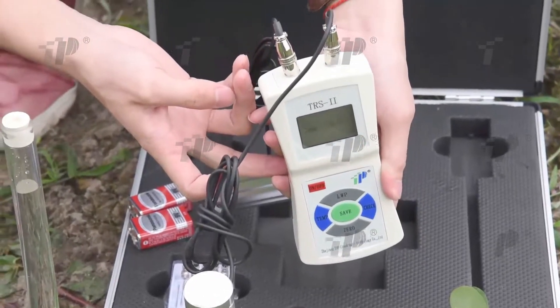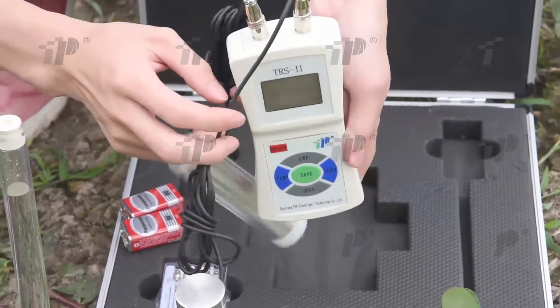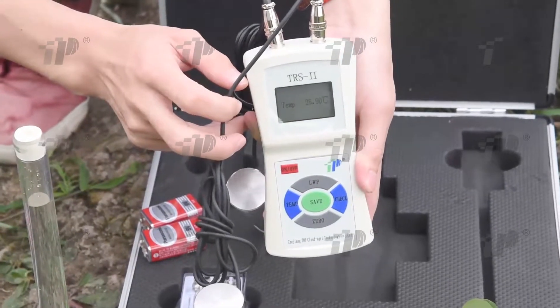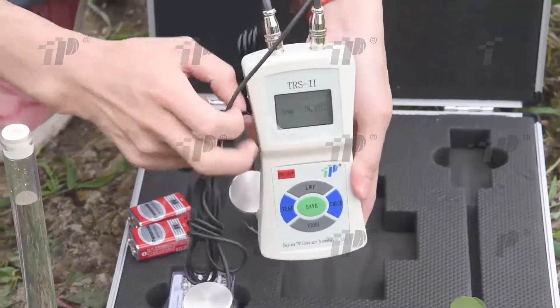Then turn on the power switch, click the temp button, and insert the tip of the temperature sensor to the place which needs temperature measurement. After two minutes you can read the data.